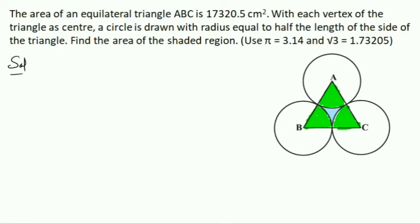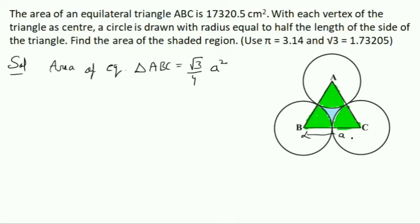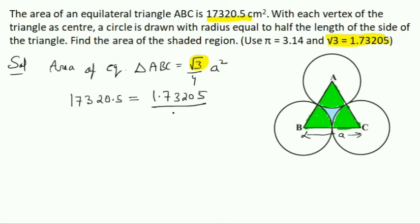Area of shaded region = area of equilateral triangle ABC − 3 × area of sector. The area of an equilateral triangle is (√3/4) × A². Setting 17320.5 = (√3/4) × A², and substituting √3 = 1.73205: 17320.5 = (1.73205/4) × A². Cross multiplying to find A².